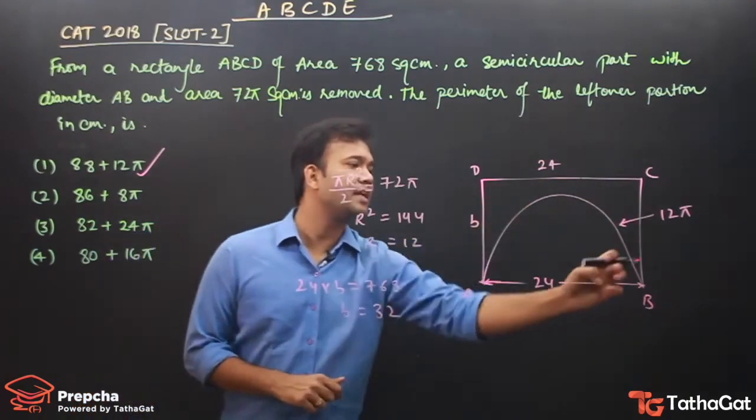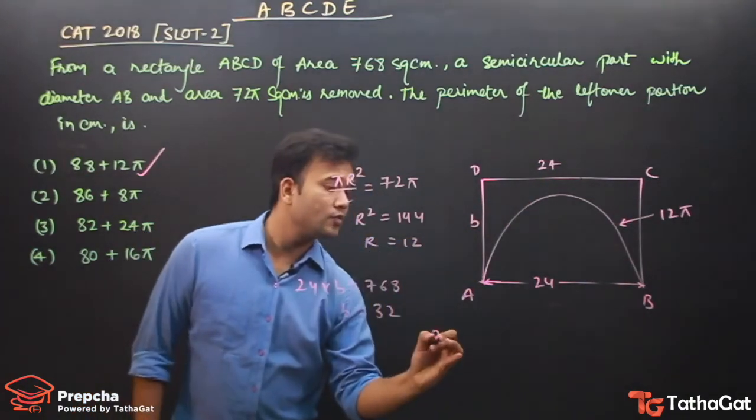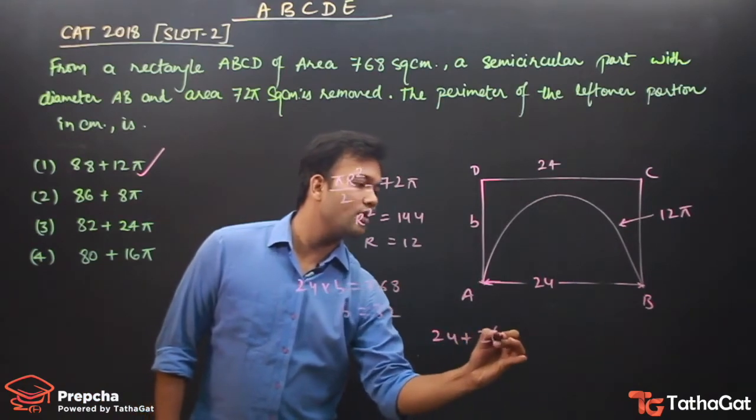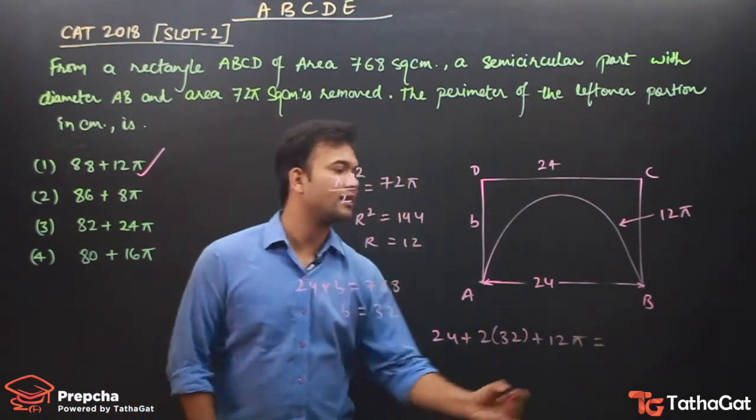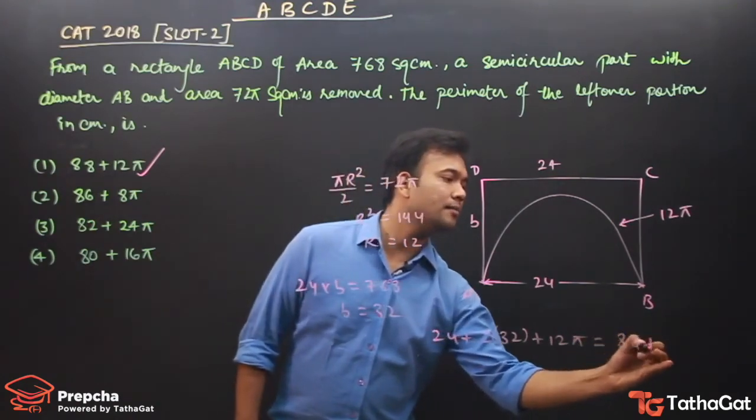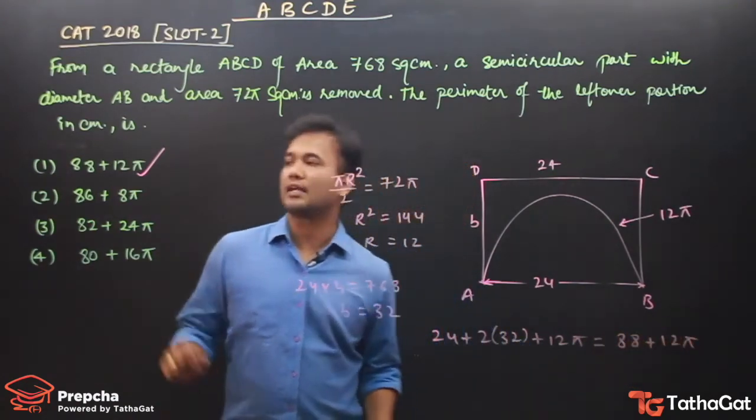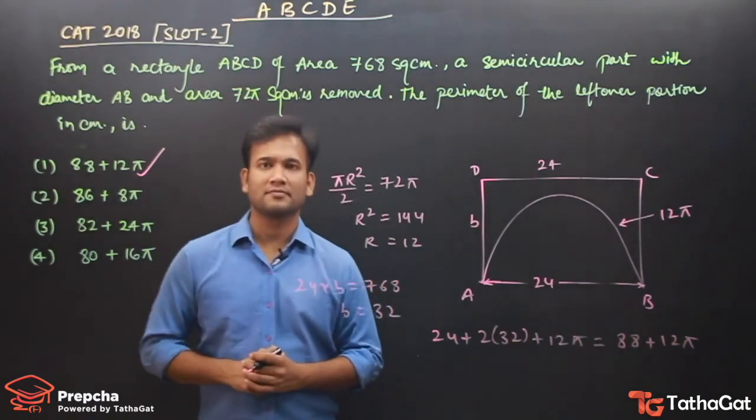The perimeter of this complete figure is 24 plus twice of 32 plus 12π. We calculate 88 plus 12π, and that's option 1. Thank you.